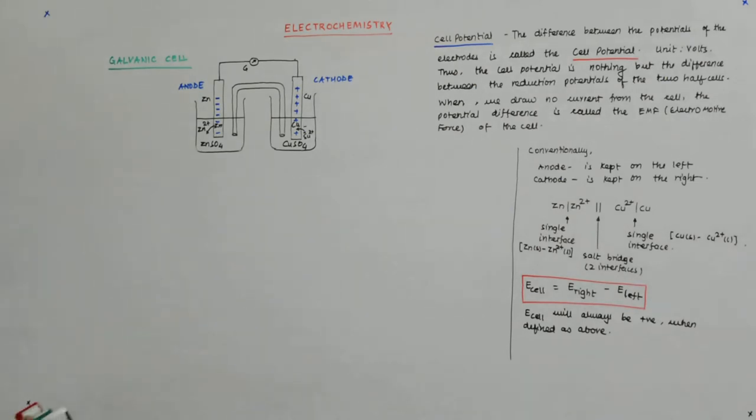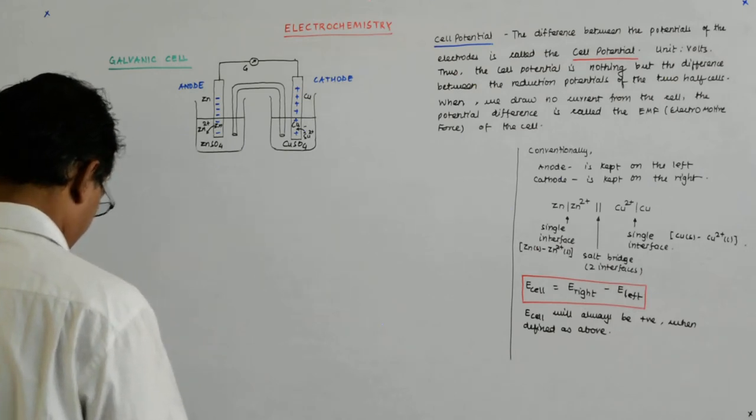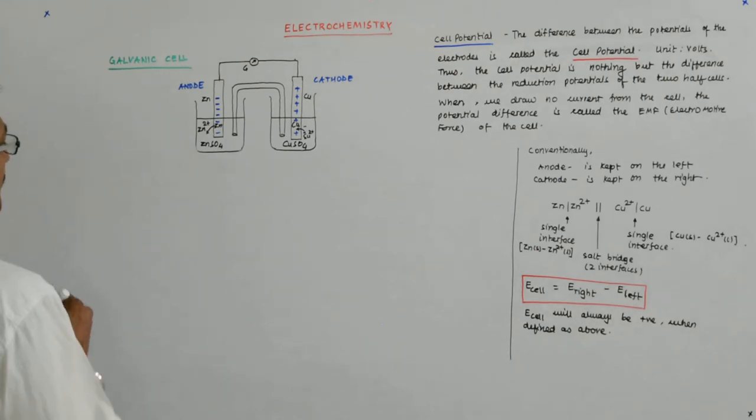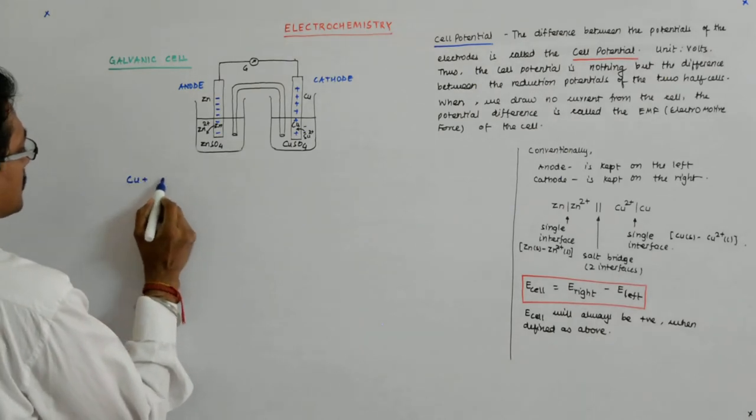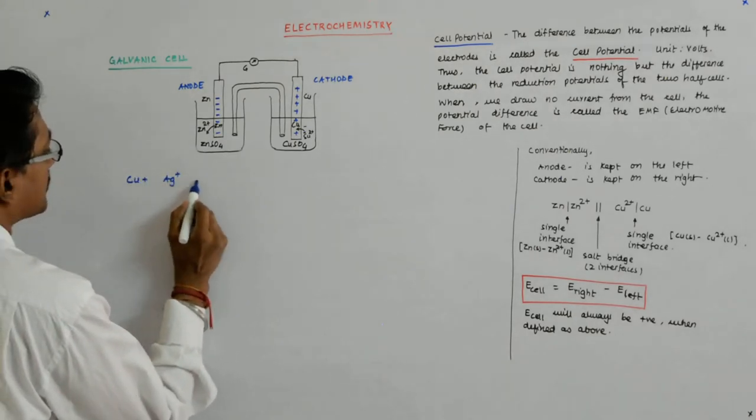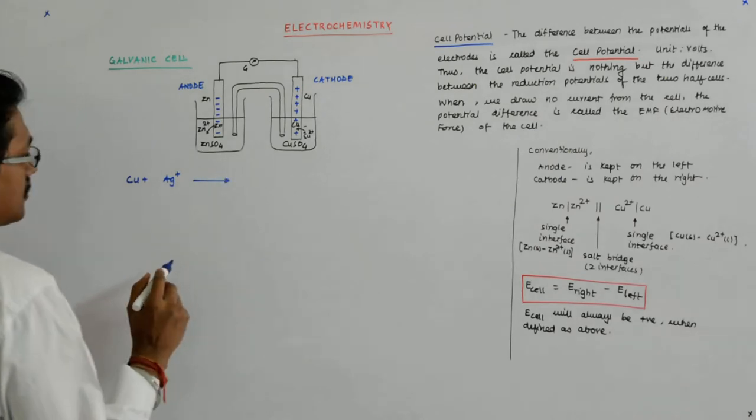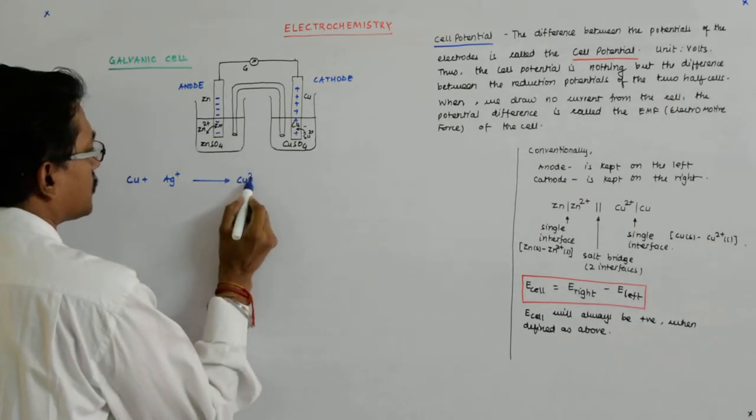Now for the system like this, we have Cu + Ag⁺ giving you Cu²⁺ + Ag.